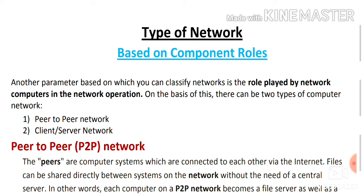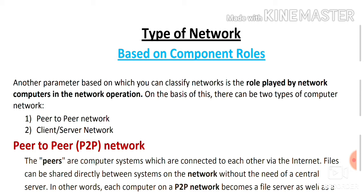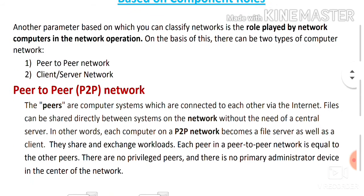Hello students, welcome back on the channel. I am your teacher Farah Arif. In the last video we learned about the type of network based on geographical spread, but in this video we will learn about the second parameter, which is component roles. Component roles specify the role played by computers in a network operation. This type is divided into two types: peer-to-peer network and client-server network.